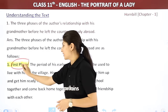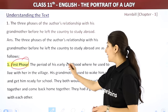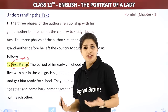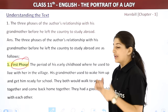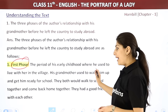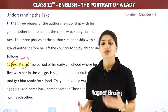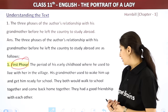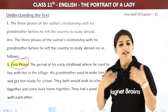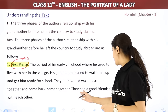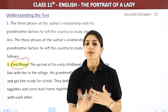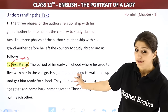The three phases of the author's relationship with his grandmother before he left the country to study abroad are as follows. The first phase was the period of his early childhood, when he used to live with her in the village. His grandmother used to wake him up, get him ready for school, walk to school together, and come back home together. They had a very good friendship and bond.